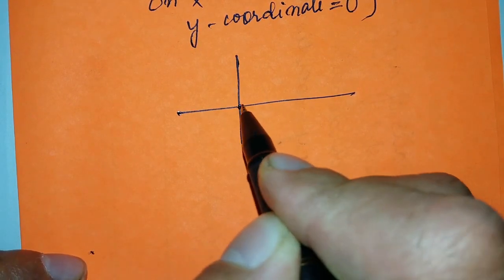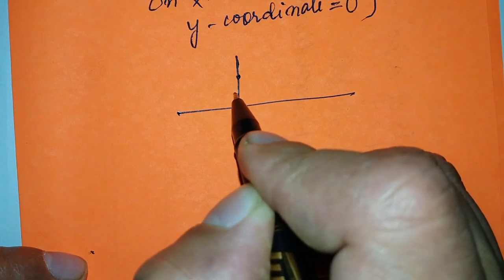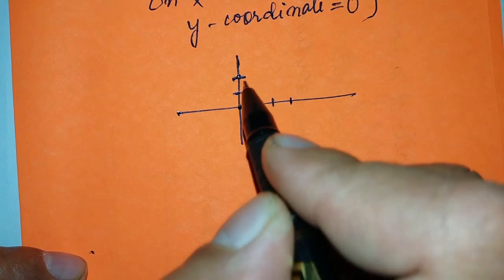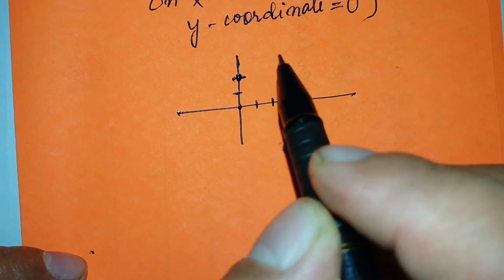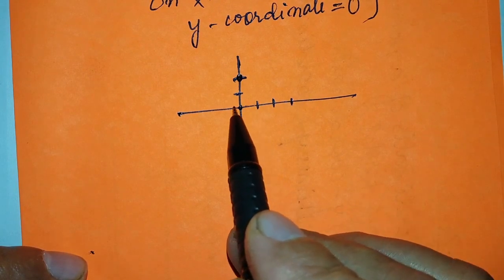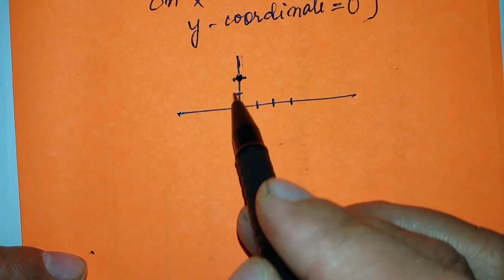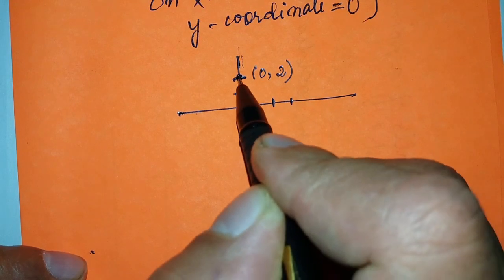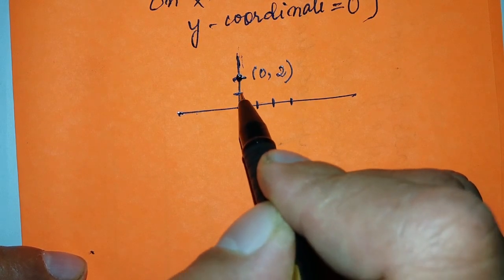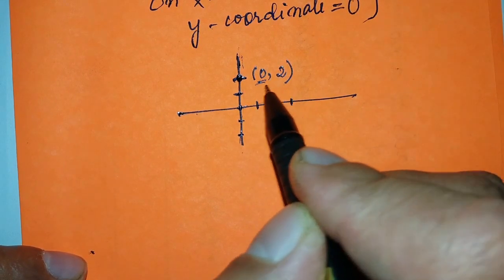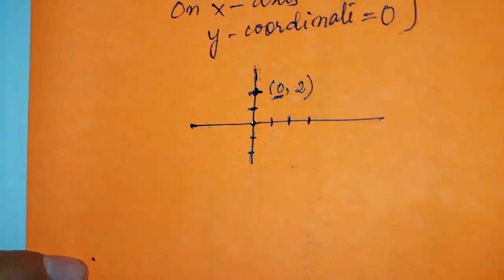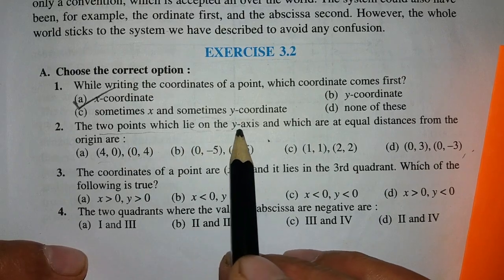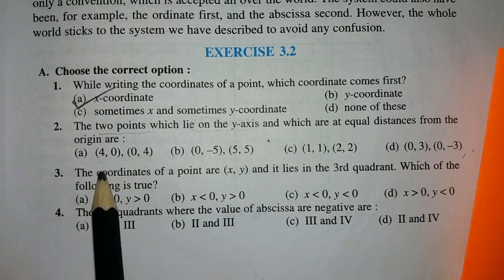Let's take a point on the Y axis. This point is neither on the right side nor on the left side — it is on the zero line of the X axis. So for any point on the Y axis, the X coordinate is 0.